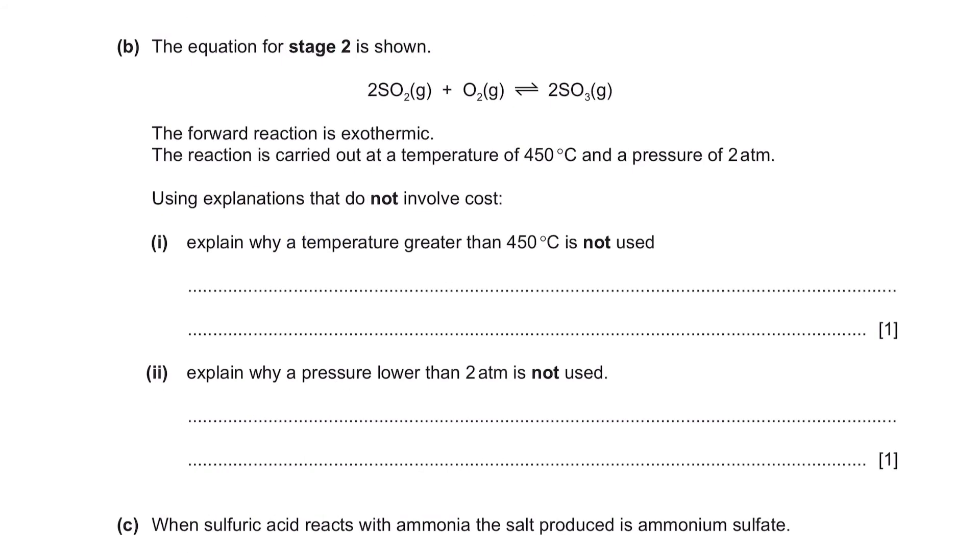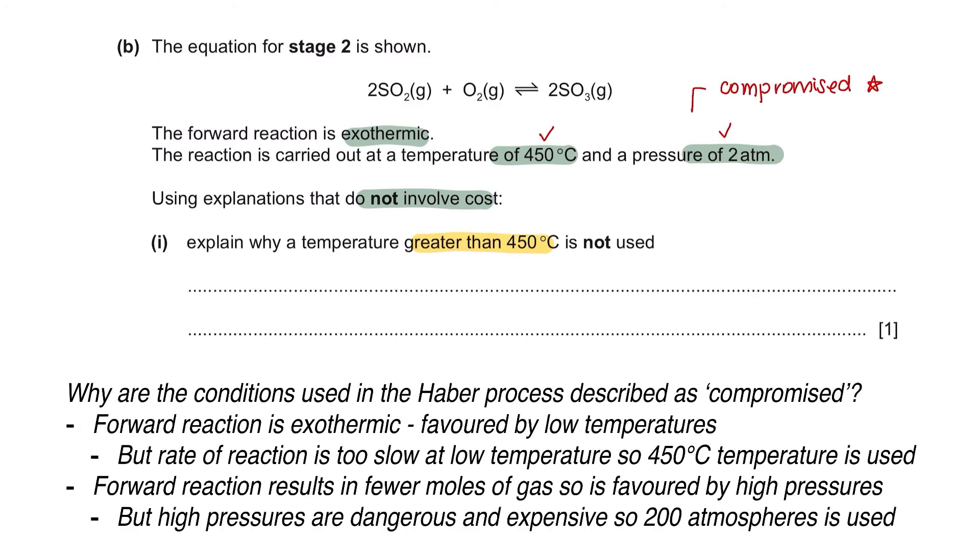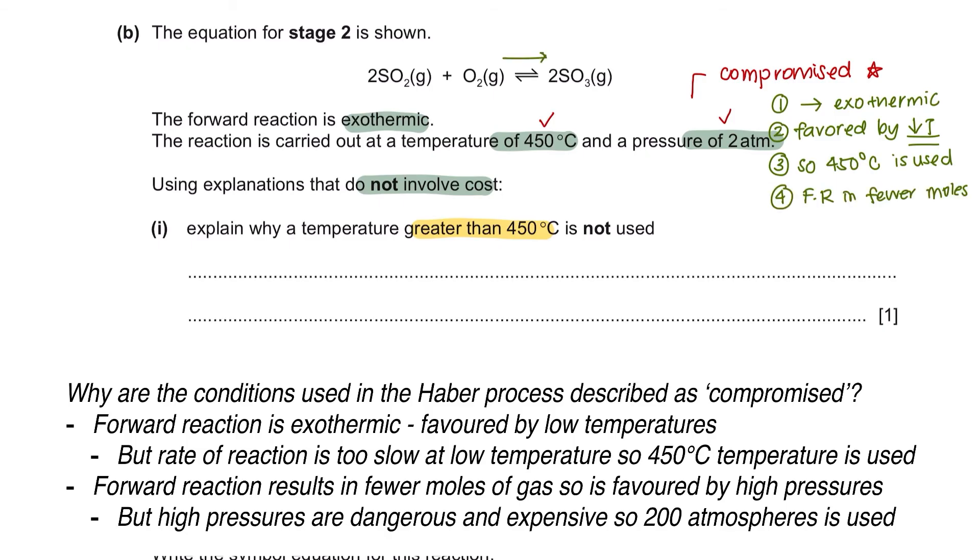Question B. The equation for stage 2 is shown. The forward reaction is exothermic. The reaction is carried out at a temperature of 450 degrees Celsius and a pressure of 2 atm. Using explanations that do not involve cost, explain why a temperature greater than 450 degrees Celsius is not used. The conditions used in contact process could also be described as compromised. The reason is because the forward reaction is exothermic, which means that it is favored by low temperature. However, the reaction will be too slow if a low temperature is being used. So 450 degrees Celsius temperature is used. This then lets the forward reaction resulting in fewer moles of gas, so it's favored by high pressure. But high pressures are dangerous and expensive, so 2 atm is being used. High pressures also cause sulfur dioxide to liquefy, removing it from the reaction itself.